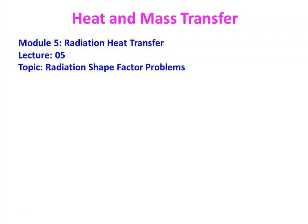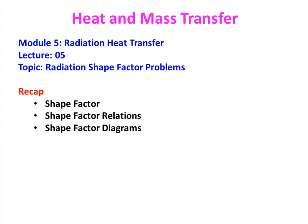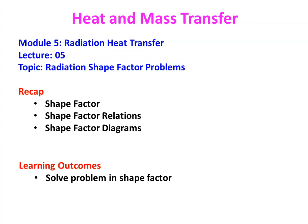We are going to solve a few problems on radiation shape factor calculations. In the previous lecture, we defined the shape factor and discussed shape factor relationships like the reciprocity rule, summation rule, and superposition rule. The shape factor is determined from diagrams available in the heat and mass transfer data book. Today we solve problems using those diagrams and relationships. The learning outcome is that students will be able to solve shape factor calculation problems on their own.